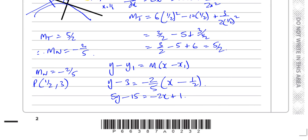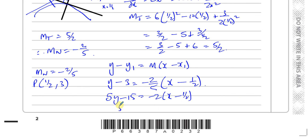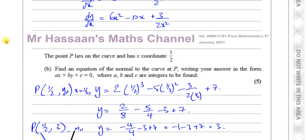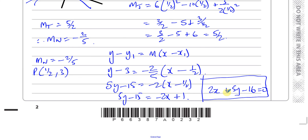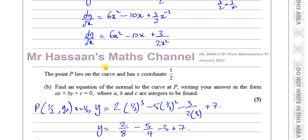Let me write that in two steps to be clear. We have 5y minus 15 equals minus 2x plus 1. Gathering the x term on the side where it's positive, the final answer is 2x plus 5y minus 16 equals zero. We have x, y and the constant on one side of the equation, all with integer coefficients. That's the equation of the normal to the curve at point P.